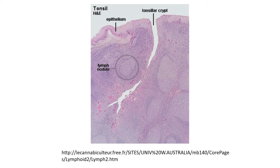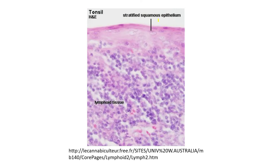This is an H&E of the tonsil. Different types of tonsils have different types of epithelium, but for the purpose of this lecture, it's best to appreciate the aggregation of lymphatic tissue as well as the epithelium — which could be respiratory or squamous epithelium depending on which tonsil it is. We also have these little crypts or grooves in the tonsils. This is a zoom-up of the stratified squamous epithelium as well as the lymphoid tissue found in the tonsils on H&E.